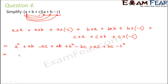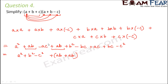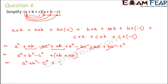Now let's rearrange to put the like terms together. We have a squared, b squared, and minus c squared — these have no other like terms. For ab, we have one ab here and one ab here, so together that gives 2ab. For ac, we have minus ac plus ac which gives zero. For bc, we have minus bc plus bc which also gives zero. Therefore the final result is a squared plus b squared minus c squared plus 2ab.